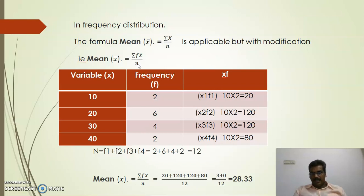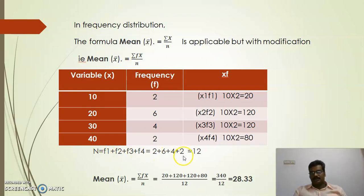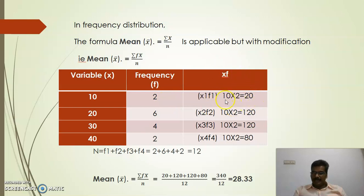There is a variation: in place of x, we sum x multiplied by its corresponding frequency. Also, to find n, we add all the frequencies together. In this problem, each variable is multiplied by its corresponding frequency to get xf, n is calculated by adding all frequencies, and applying this formula we arrive at the mean.